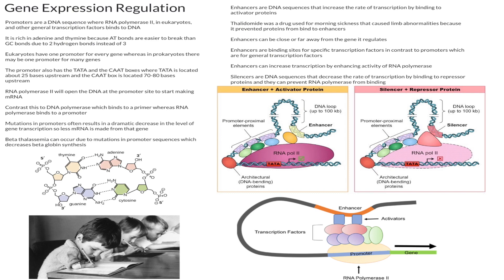Enhancers can increase transcription by enhancing the activity of RNA polymerase. Looking at this image of enhancers and promoters, the activators are binding to the enhancer region, transcription factors are binding to the activator as well as the promoter, and all of this helps start transcription — turning DNA into RNA.